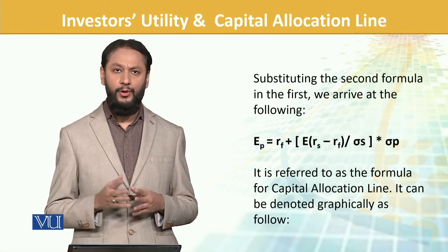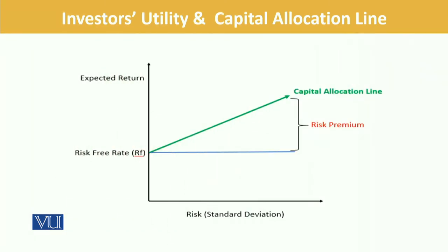We will discuss this a little more and also look at it graphically. The starting point of CAL is rf — the line starts right from rf on the y-axis because at that point the standard deviation or risk is zero. As you move along and your risk increases, your expected return also increases accordingly — that is what this line reflects. The difference between the two is the risk premium for taking the extra risk. So the CAL captures: when I take on risk in risky assets, where will I stand? That is the graphical representation of CAL. We will spend a little more time on it in the upcoming module.